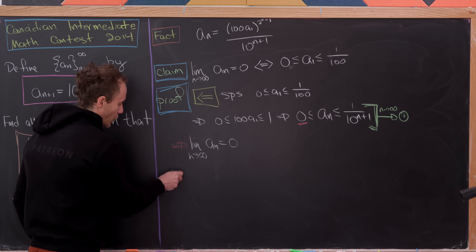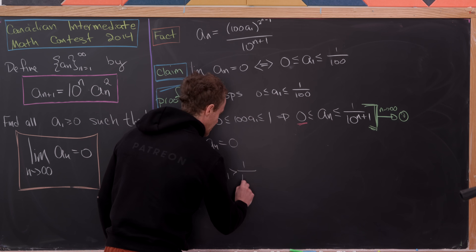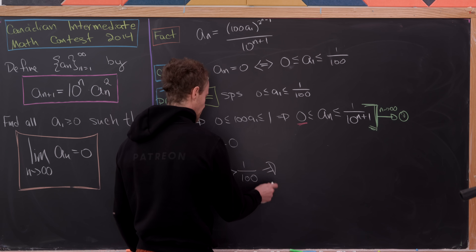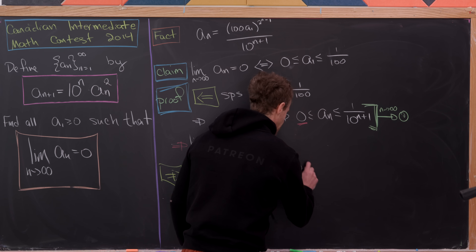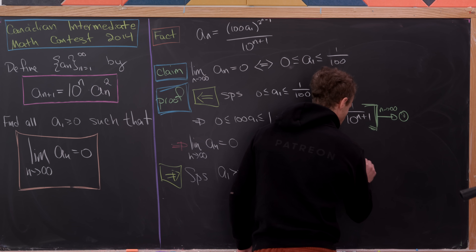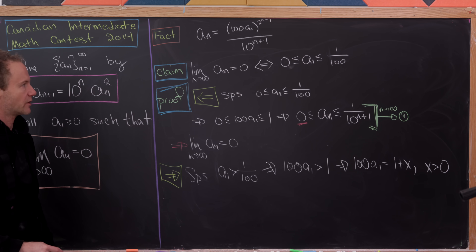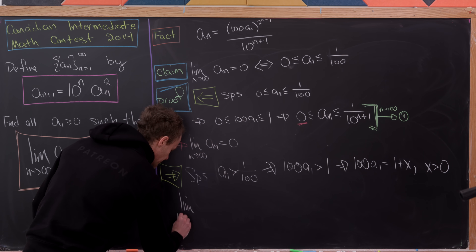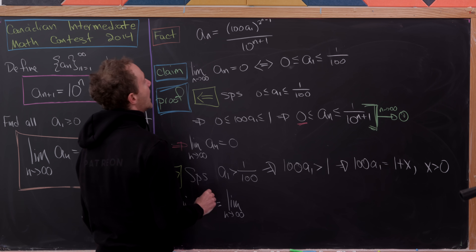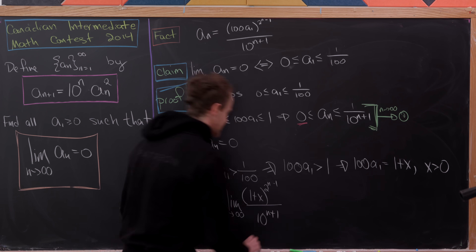Now let's do the forward direction by contrapositive. Suppose a_1 > 1/100, so 100·a_1 > 1. We can write 100·a_1 = 1 + x with x > 0. The limit as n → ∞ of a_n becomes the limit of (1+x)^{2^{n-1}} / 10^{n+1}. We'll do a binomial expansion on (1+x)^{2^{n-1}} and keep the first couple of terms to get a lower bound.